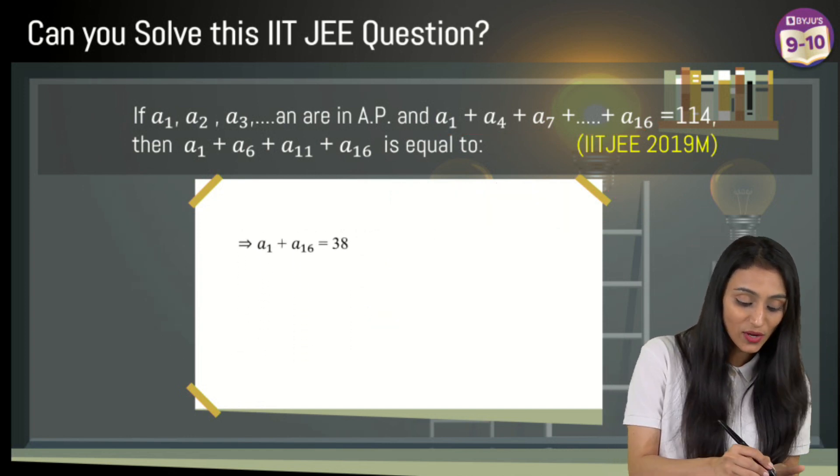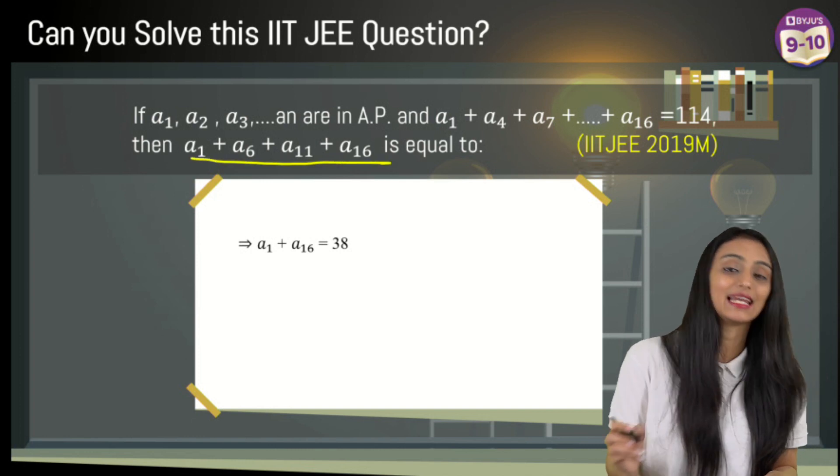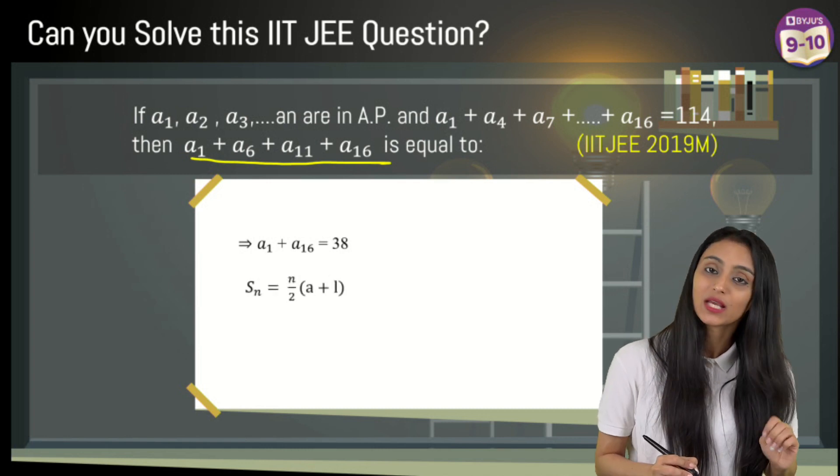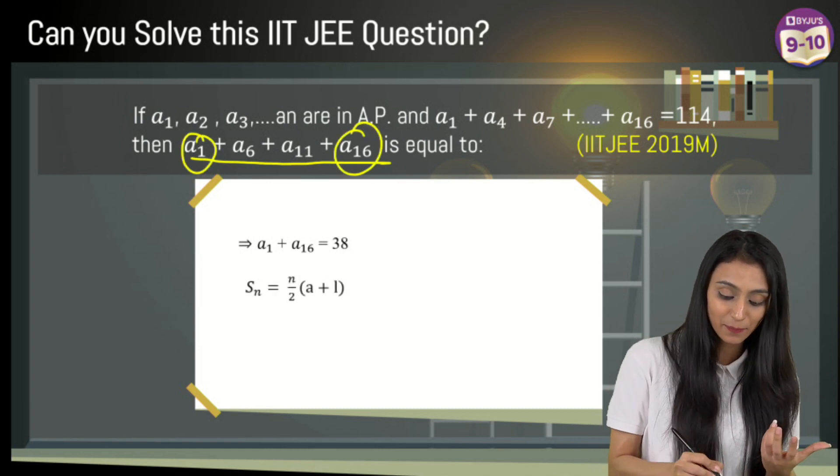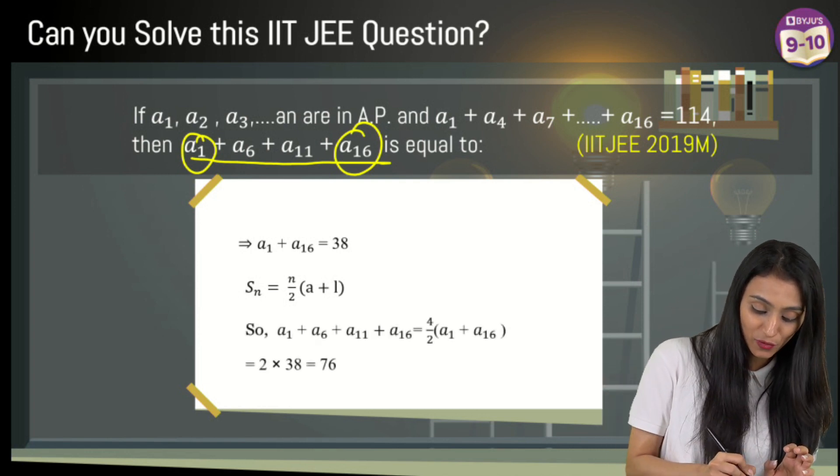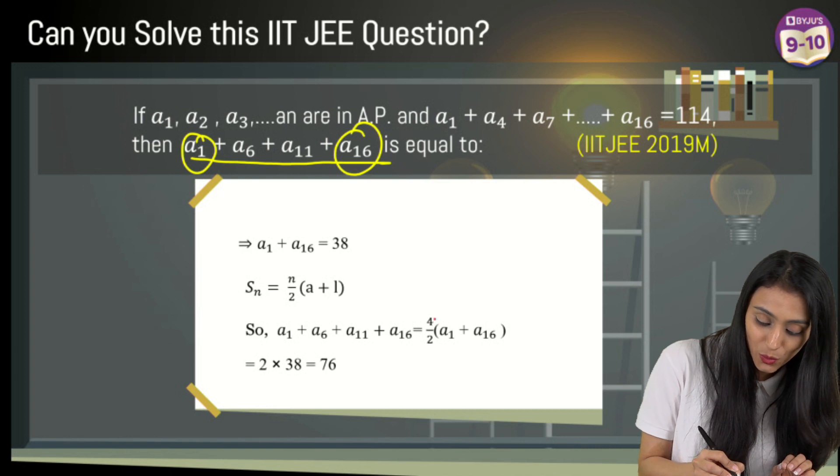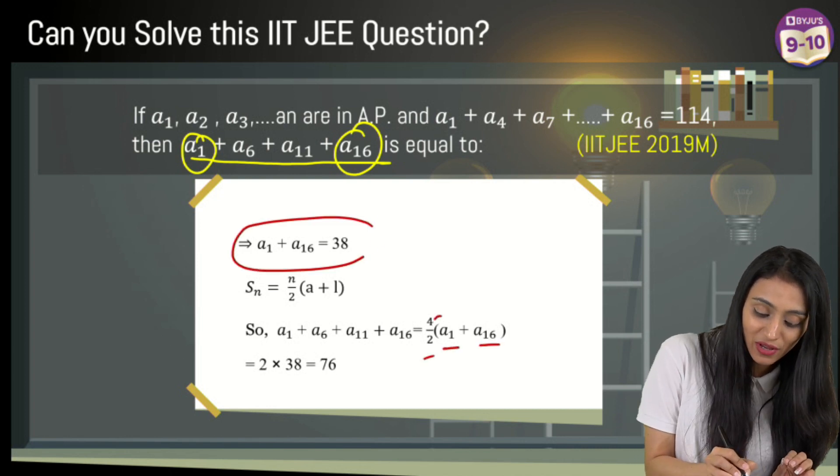Now the question is asking for the value of a₁ + a₆ + a₁₁ + a₁₆. Total 4 terms are here. Again I'll be using the same formula. I have the first term and the last term. Total terms are 4, so this time I'm replacing n with 4.